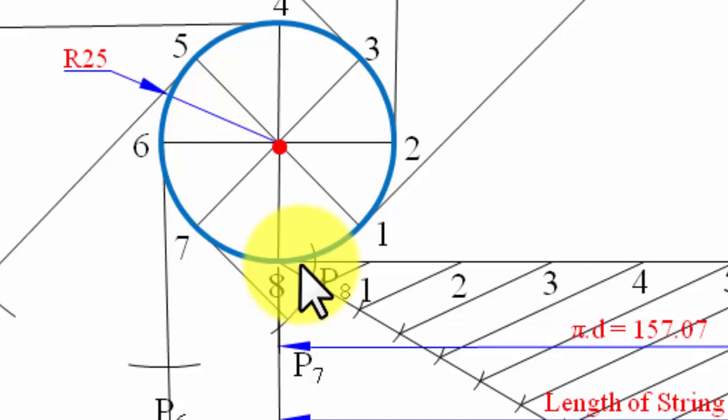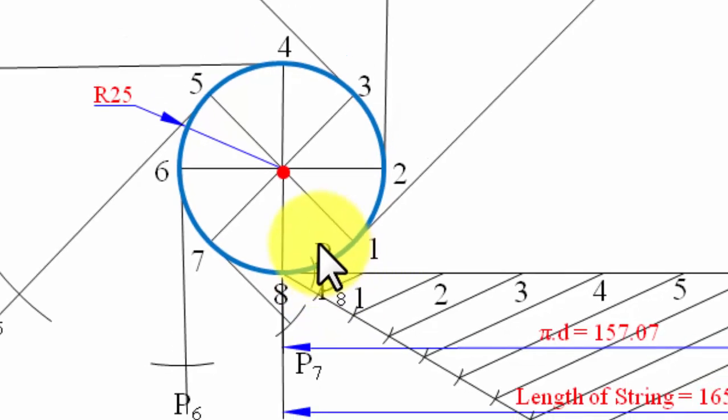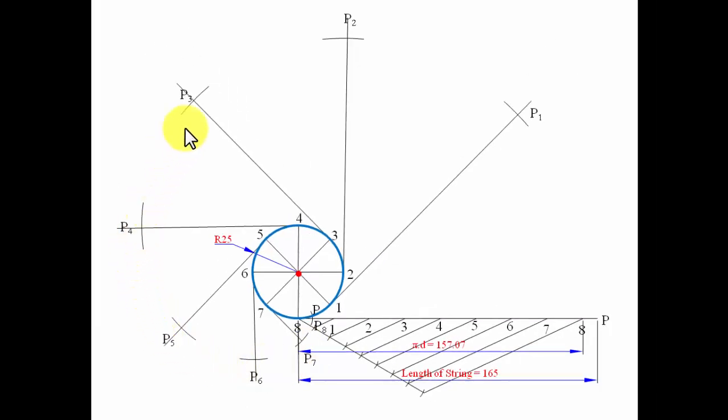This is the extra portion of the string. Finally, this point over here is going to be point P. This is an approximation. When you join all these points in sequence with the help of a smooth curve, the curve is what you call an involute.